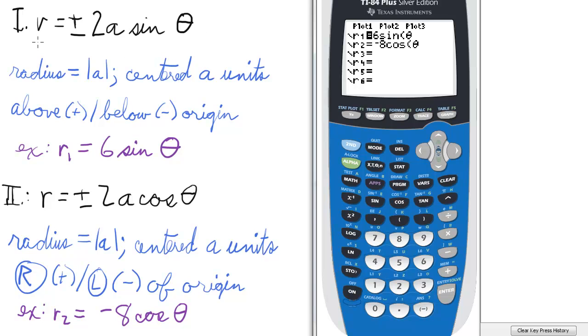There are two basic types of polar equations for circles. In the first one, we have r equals plus or minus 2a sine theta, where the radius is the absolute value of a. It's centered a units above or below the origin depending on whether the coefficient of sine is positive or negative.